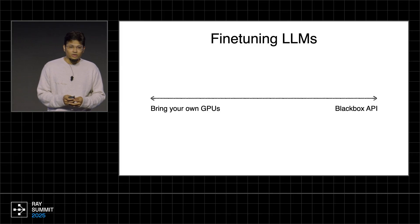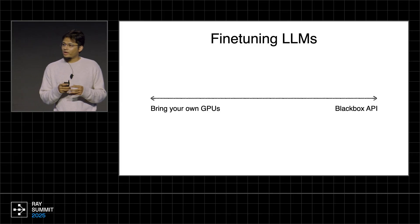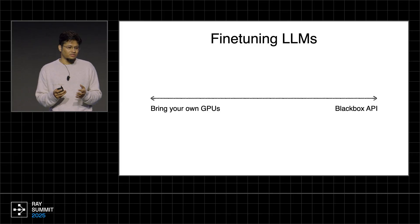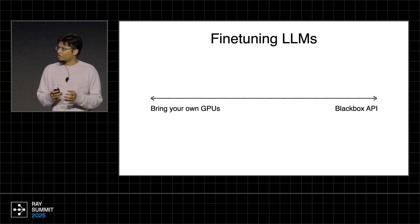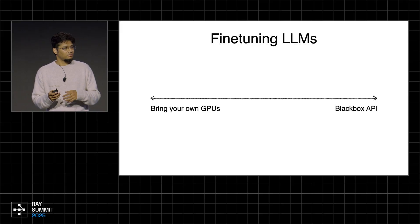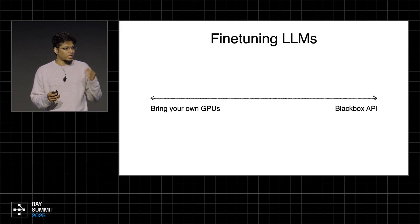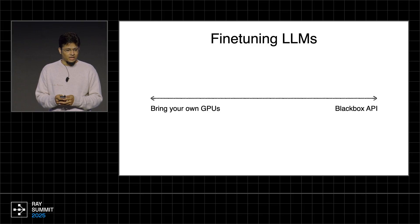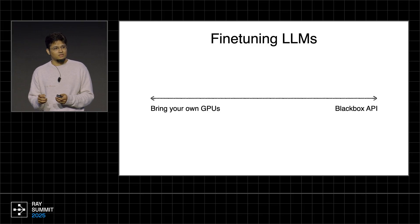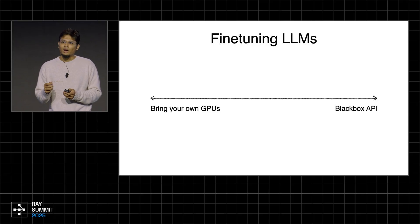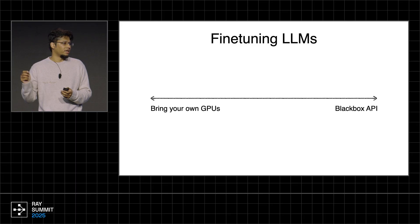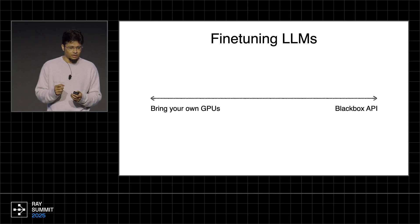Right now, there are two options for fine-tuning LLMs at two extremes. One is bring your own GPUs, write your own code, do everything, manage everything on your own. And the other extreme is a black-box API where you go and upload a dataset and click a button.